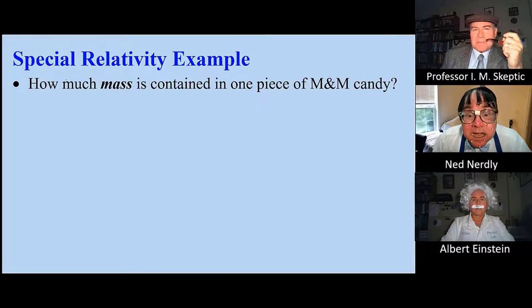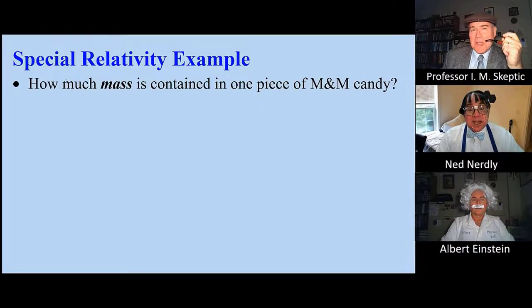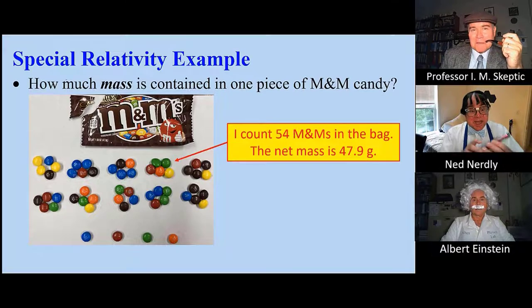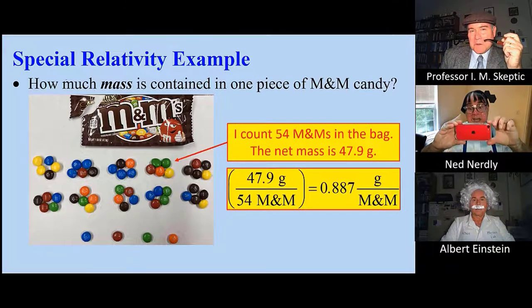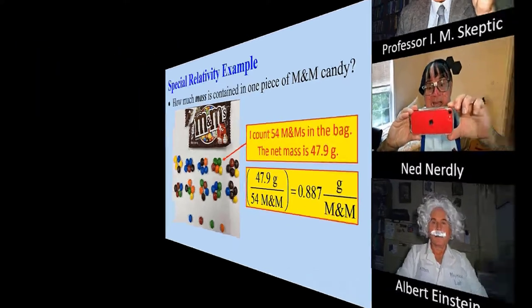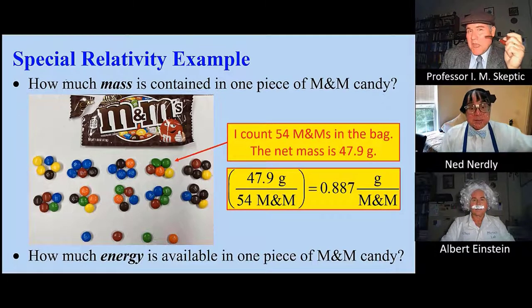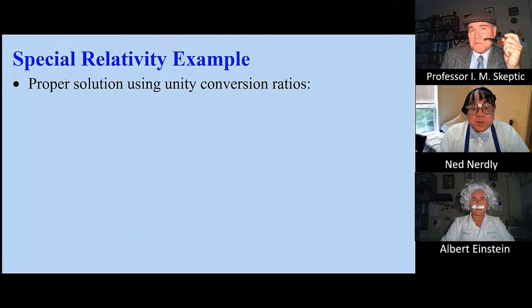Here's an example. How much mass is contained in one piece of M&M candy? When I counted 54 M&Ms in this bag, we divide mass by the number and get 0.887 grams per M&M. So how much energy is available in one M&M candy? Here's the proper solution using unity conversion ratios.